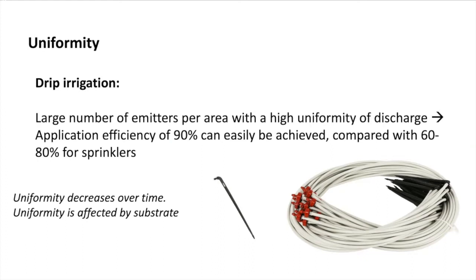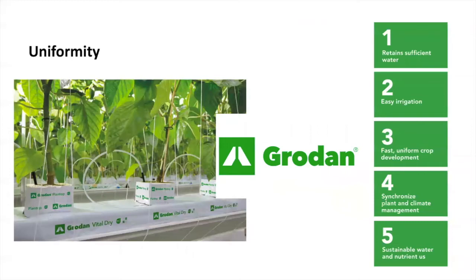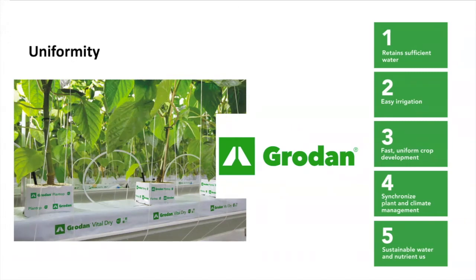Drip irrigation, in comparison to sprinklers, can provide more uniformity in an easy way. As we mentioned, uniformity can be affected by the substrate. Some brands have worked really hard developing substrate options to improve uniformity. Grodan is one of those brands. We know Grodan is an excellent option to provide water retention to our plants, mostly used for germination. However, Grodan also develops slabs recognized for the excellent conditions provided at the root zone level, including uniformity to improve crop development.